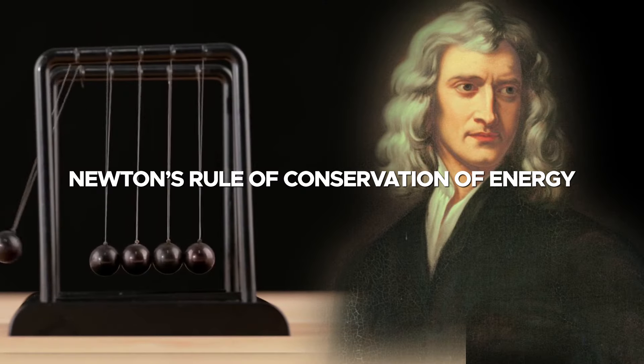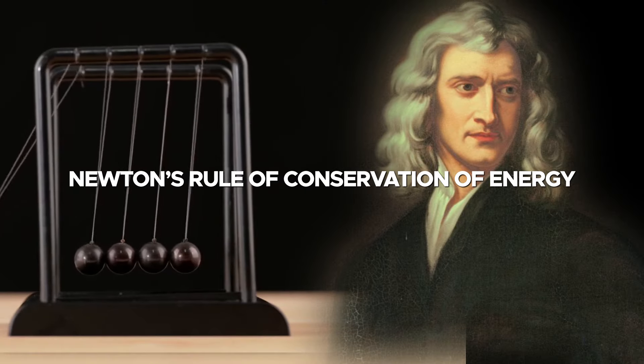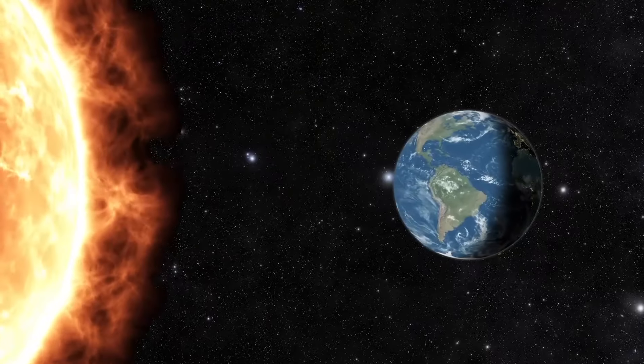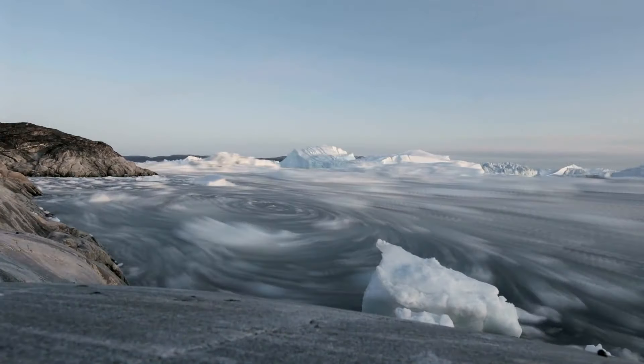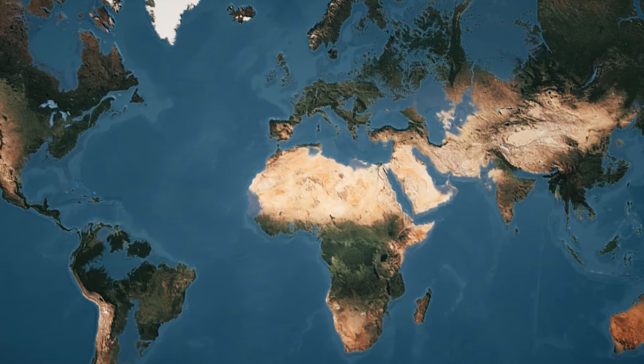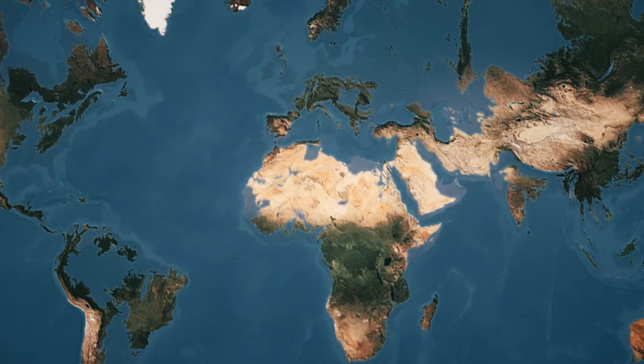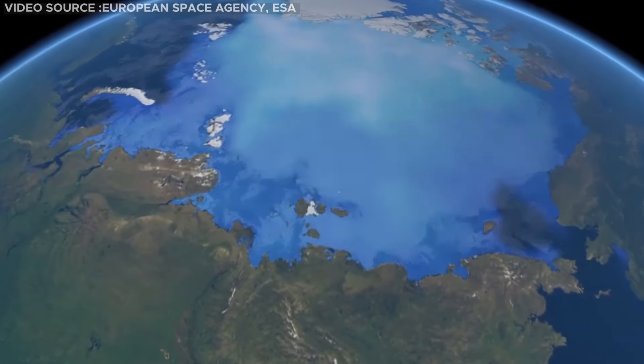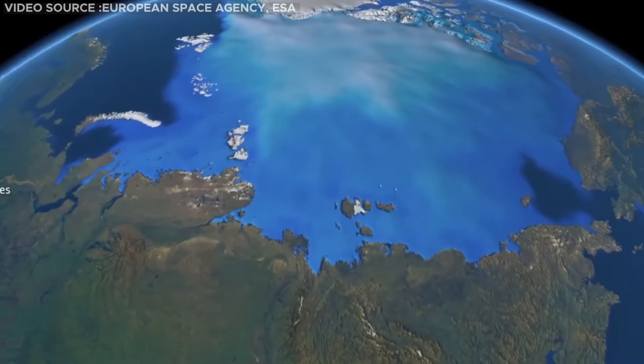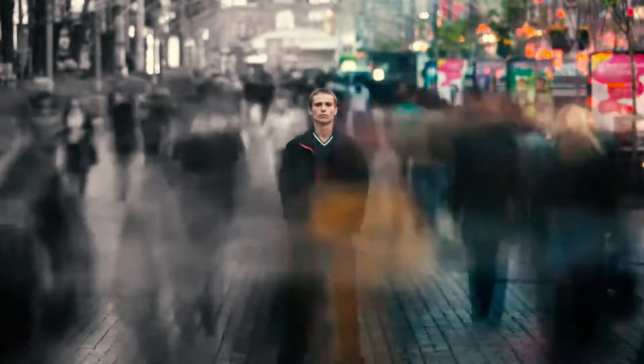Newton's rule of conservation of energy plays a pivotal role in the continual fluctuation of Earth's rotation rate. According to this rule, as glaciers melt and sea levels rise, a greater amount of mass shifts from regions near the poles to closer to the equator. This redistribution of mass effectively decelerates the Earth's rotation, leading to a gradual lengthening of our days.